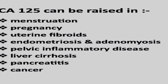CA-125 is a tumor marker that increases in the blood in cases of ovarian cancer. However, this test is described as a non-specific test because it can be increased in some benign conditions like endometriosis, adenomyosis, fibroid, and chocolate cysts. It can also be increased in some non-gynecological benign conditions like pancreatitis and peritonitis.